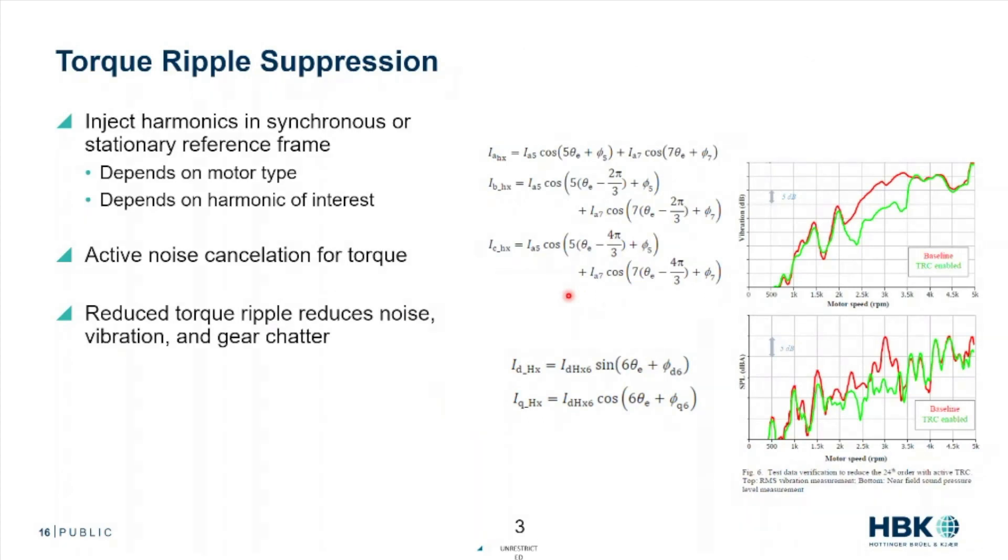Torque ripple suppression: we can inject harmonics at a certain area in the machine, in the synchronous or stationary reference frames, depending on motor type. But it's basically active noise cancellation for torque. If we have a torque ripple, we can inject harmonics into the current to try to eliminate that.